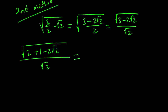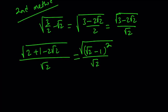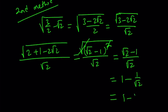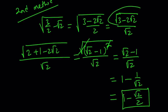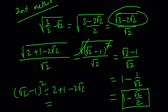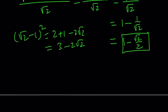Notice that we have a² + b² minus 2ab in the numerator inside the radical, which can be written as (√2 minus 1)². You can then take the square root and divide by √2. Since √2 minus 1 is positive, the square root and square cancel, giving (√2 minus 1) / √2, which equals 1 minus 1/√2, or 1 minus √2/2 — the same answer as before.